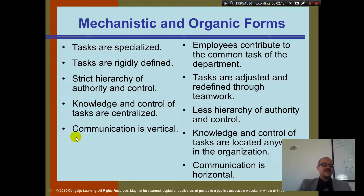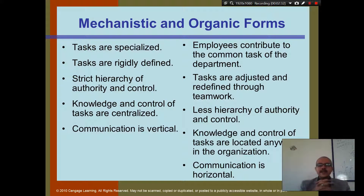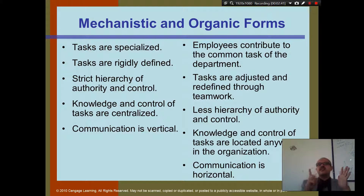On the other hand, in an organic structure, communication is horizontal, and knowledge and control of tasks are located anywhere in the company — meaning anyone in the company has their own role and power. Which one has more centralization — organic or mechanistic? In a mechanistic structure, you have to be centralized; the big boss needs to know everything because everything has to run like a clock.